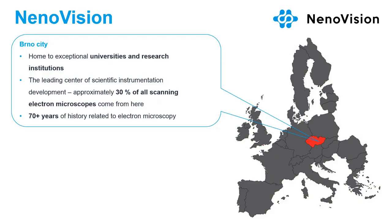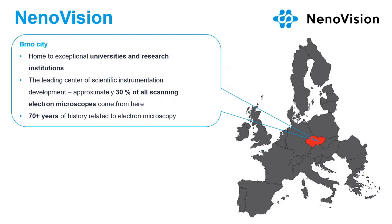At the end we will choose a few interesting questions which I will answer aloud. First, let me introduce the company. We are nanoVision, coming from Brno in the center of Europe. Brno is home to exceptional universities and research institutions and is a leading center of scientific instrumentation development with more than 70 years of history related to electron microscopy. nanoVision is a spin-off of Brno University of Technology and the Central European Institute of Technology. Other major names here include Thermo Fisher Scientific, Tescan, Orsay Holdings, DeLong Instruments, Masaryk University, and the Institute of Scientific Instruments.